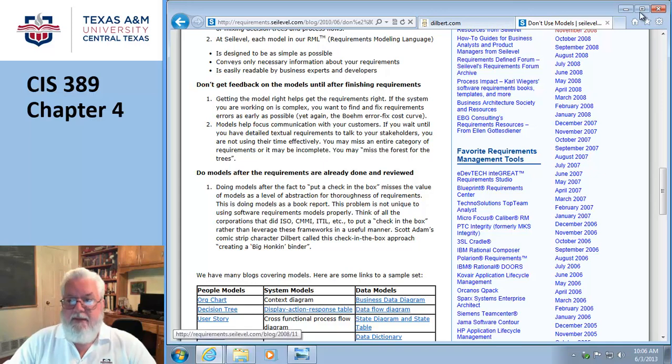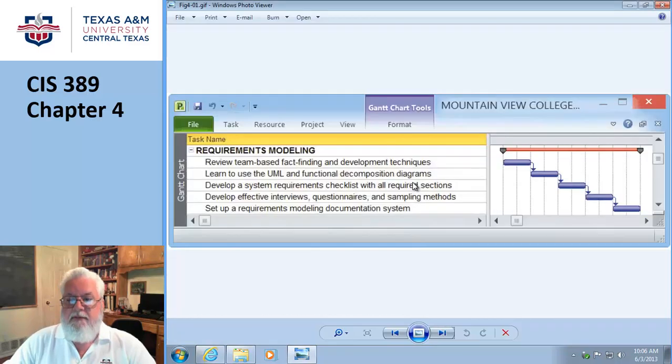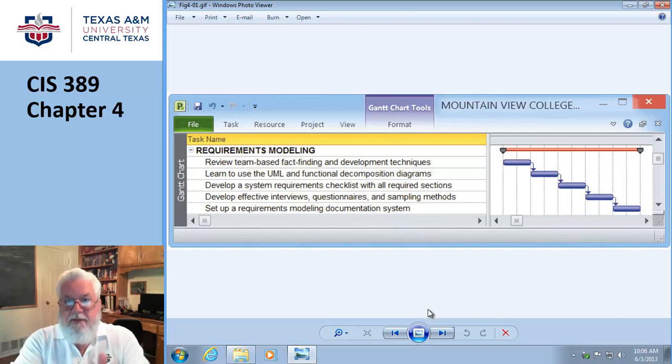Okay, so let's crank. So again, we're in the system analysis piece. And we're talking about requirements modeling. So they've broken it up into chunks about the fact finding and development techniques, using modeling and decomposition, developing a system requirements checklist, developing interviews, questionnaires, and other ways of getting information. And then of course, putting all the documentation together. So, let's turn to page 130 and let's get cranking.